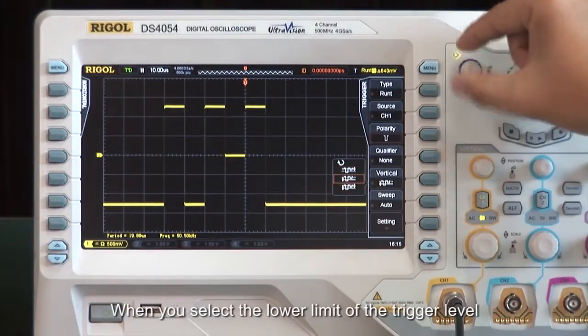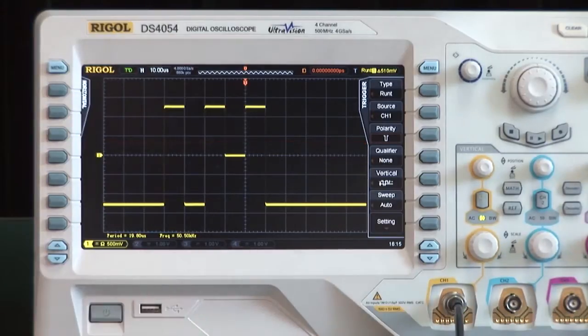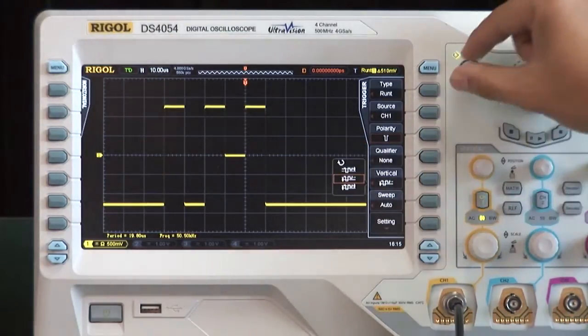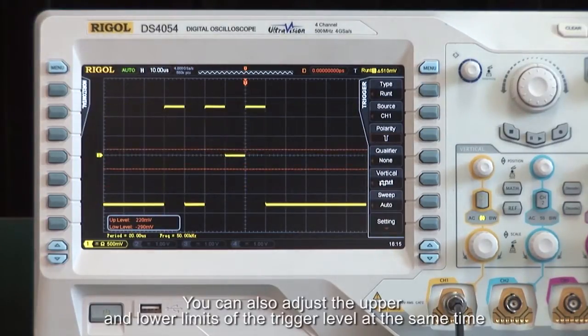When you select the lower limit of the trigger level, the lower limit will change and the upper level will remain unchanged. You can adjust the upper and lower limits of trigger levels at the same time.